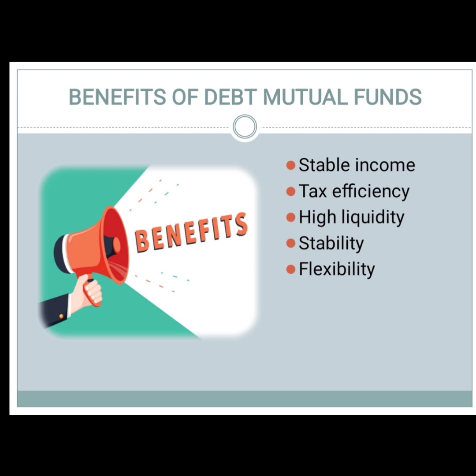Debt mutual funds also offer you an option of moving your money to different funds. This is possible through a systematic transfer plan, also known as STP. Here, you have the option to invest a lump sum amount in debt mutual funds and systematically transfer a small portion of the fund into equity at regular intervals. This way, you can spread out the risk of equities over a specified period of months rather than investing the entire amount at one time. Thank you.